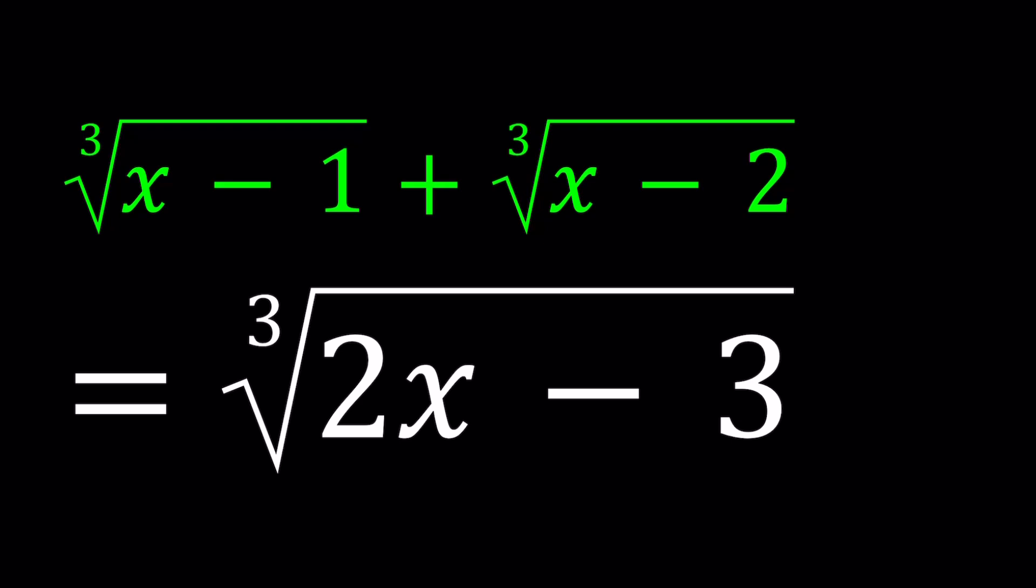Now, there's something nice about this problem, not just an ordinary cube root problem, but notice that the radicands, that's what they're called, the expressions inside the radicals, if you look at them carefully, you should realize something. This is something important because when you are preparing for competitions or Olympiads, you should definitely have an eye for these kinds of things. We have x minus 1 and x minus 2. If you add them, you get 2x minus 3.